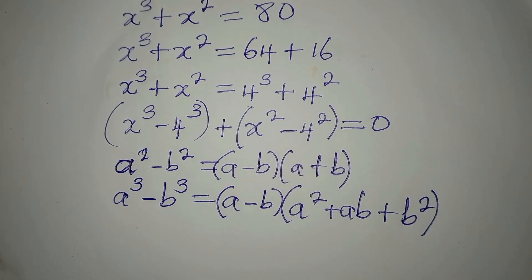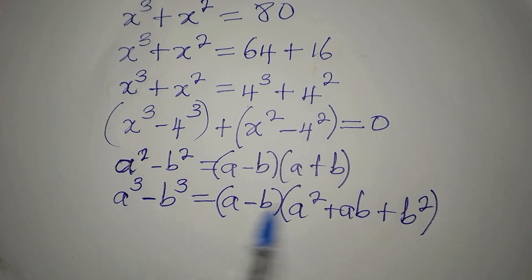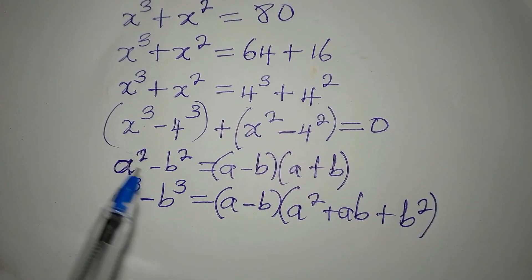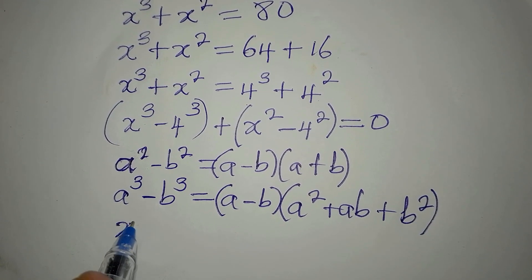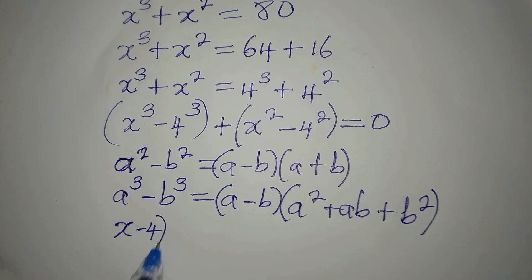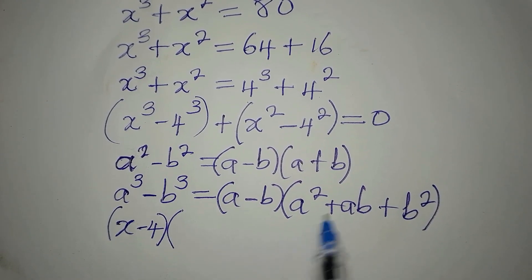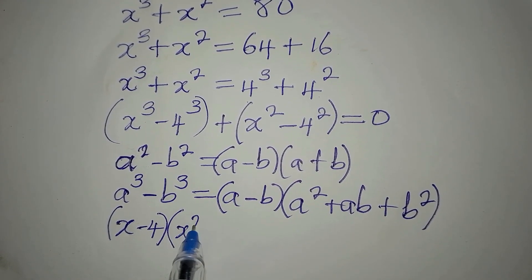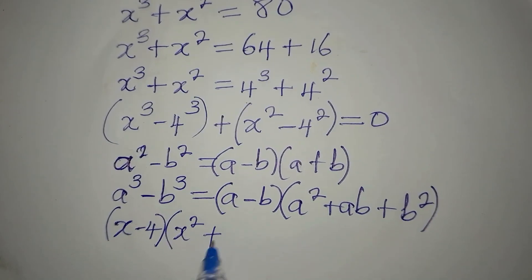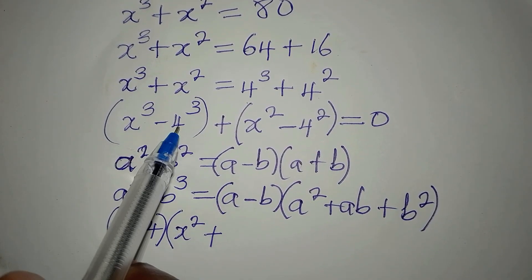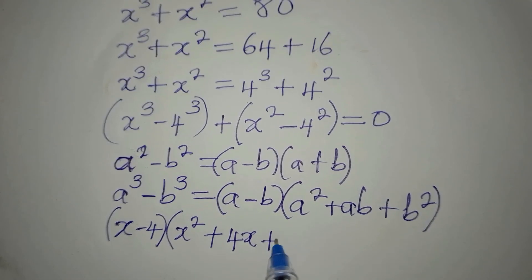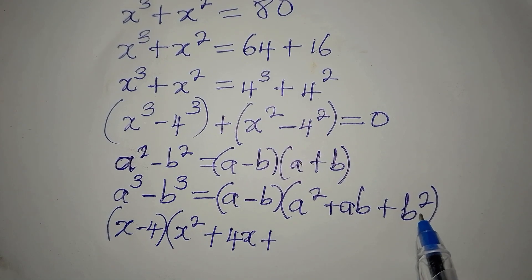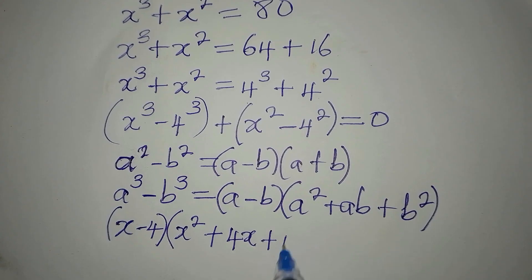Expressing x³ - 4³ using the difference of cubes identity: (a minus b) becomes (x minus 4), then into a squared which is x squared, plus ab which is 4x, plus b squared which is 4 squared, giving 16.